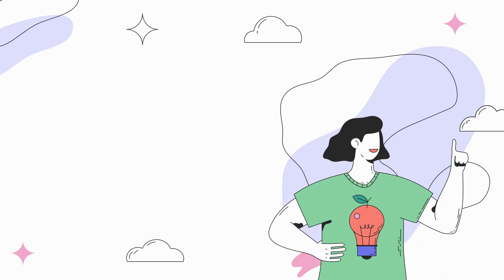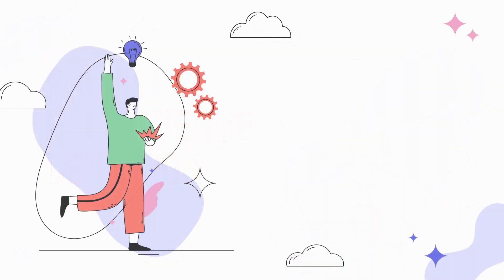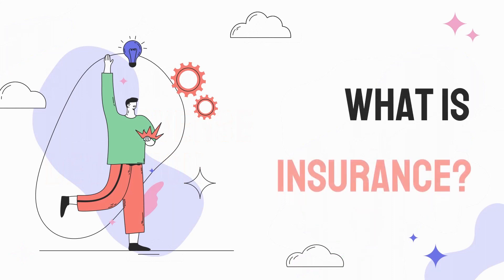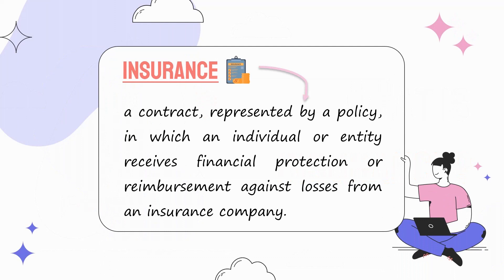Greetings ladies and gentlemen, welcome to our video where we will explain in detail about provision for adverse deviation. But before we discuss that, we need to know what insurance is. Insurance is a contract represented by a policy in which an individual or entity receives financial protection or reimbursement against losses from an insurance company.